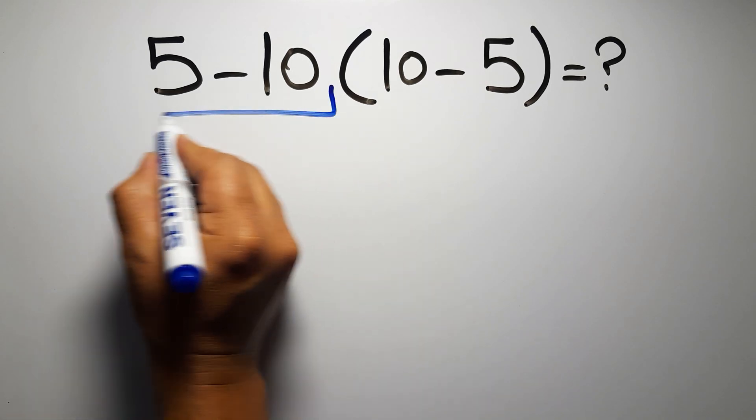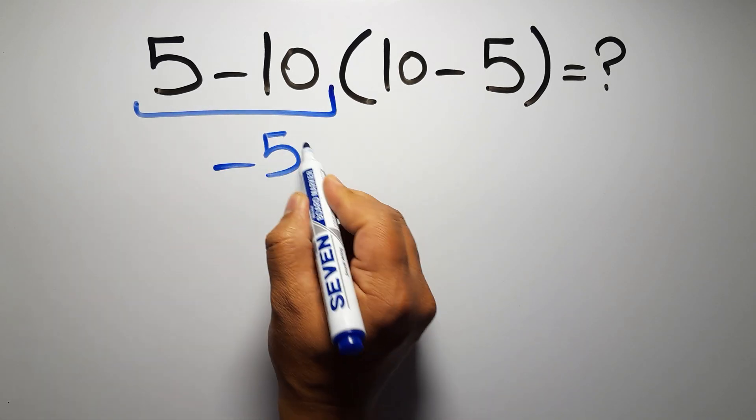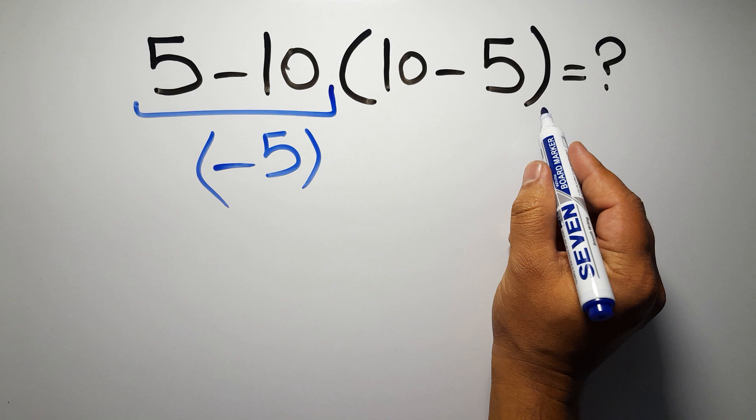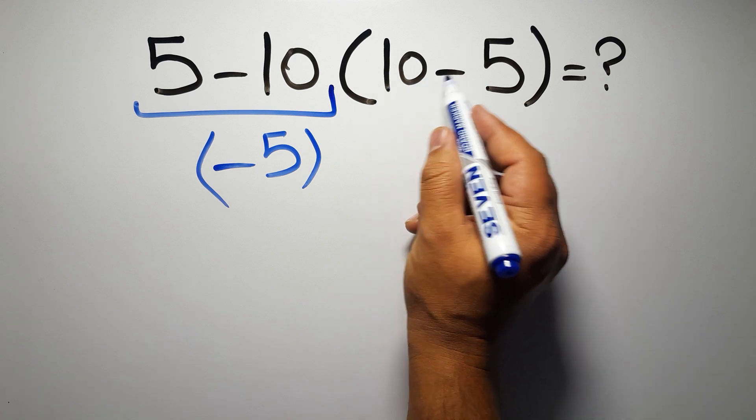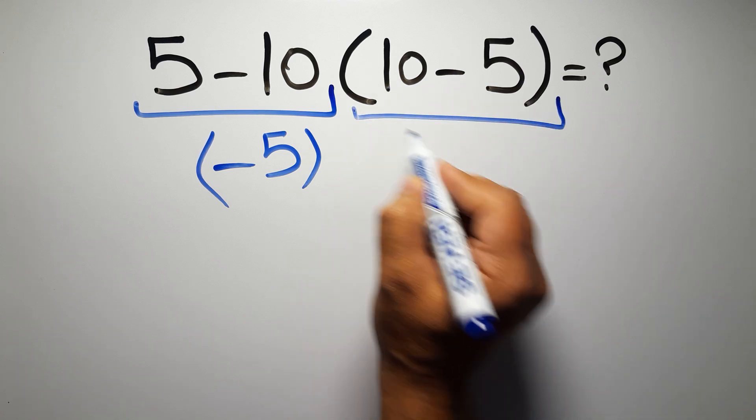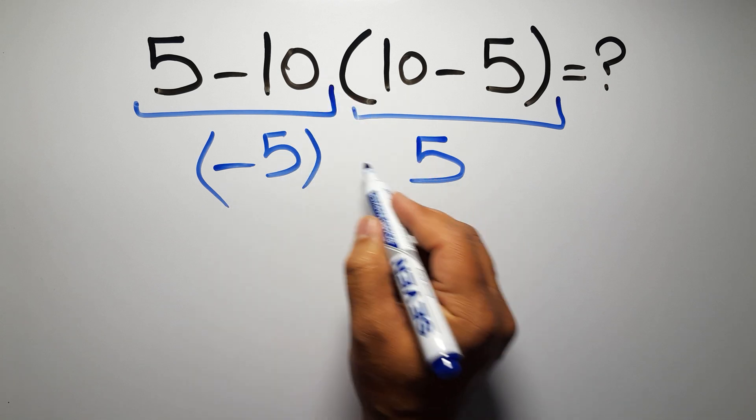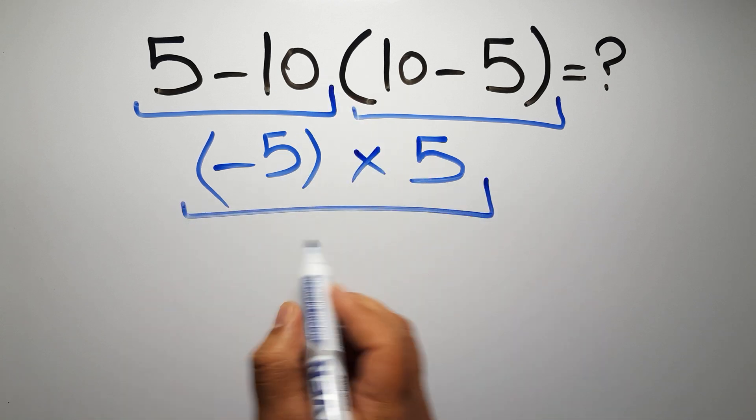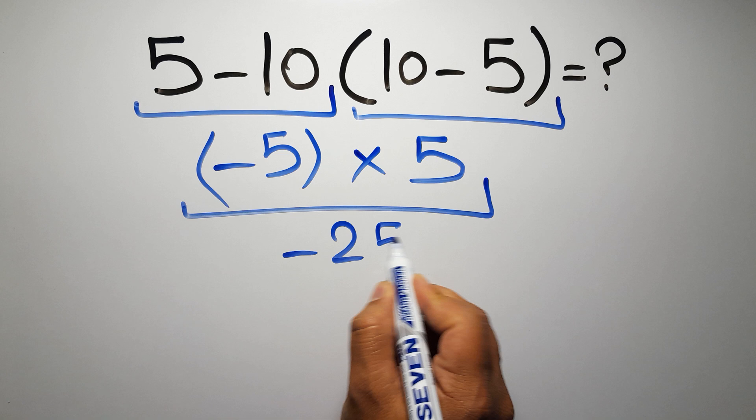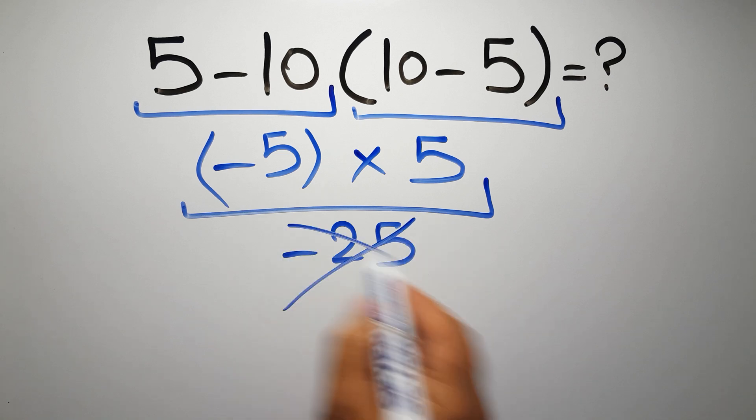5 minus 10 gives us negative 5, and here inside these parentheses we have 10 minus 5 which equals 5. So negative 5 times 5 gives us negative 25, but this answer is not correct because according to the order of operations...